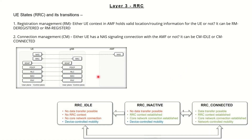In layer 3 RRC, the user starts getting in touch with the core network. There are different states which show how the user is connected to or controlled by the core network. There are three different states: idle, inactive, and connected mode.